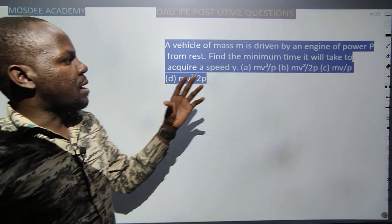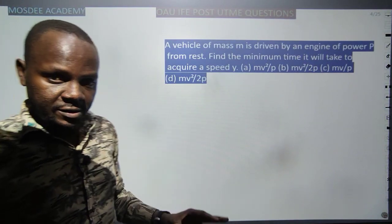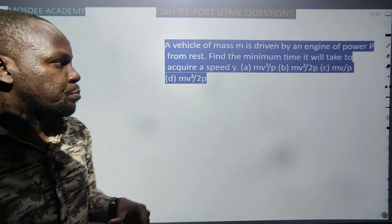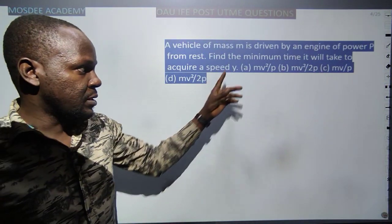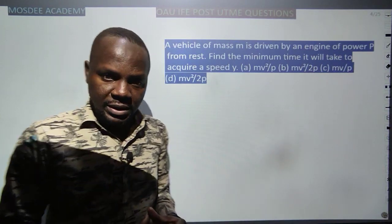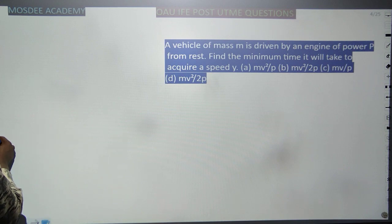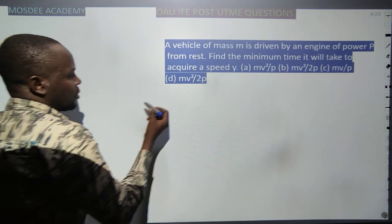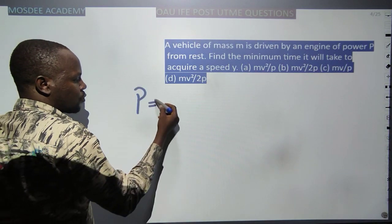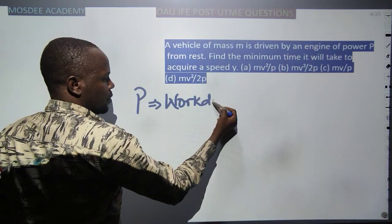A vehicle of mass M is driven by an engine of power P from rest. Find the minimum time it will take to acquire speed V — it is V, not Y, as all options are in terms of V. The solution: power equals work done divided by time.